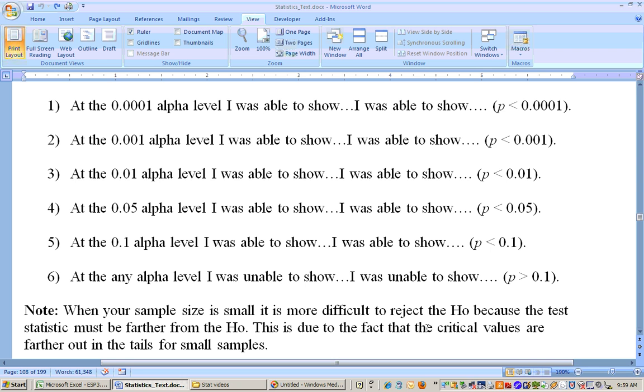And then finally here, at any alpha level, if you were unable to show something, you could just say, I was unable to show it and say your p-value must have been greater than what? 0.1. Okay, so we'll stop there and that's section 7.3.